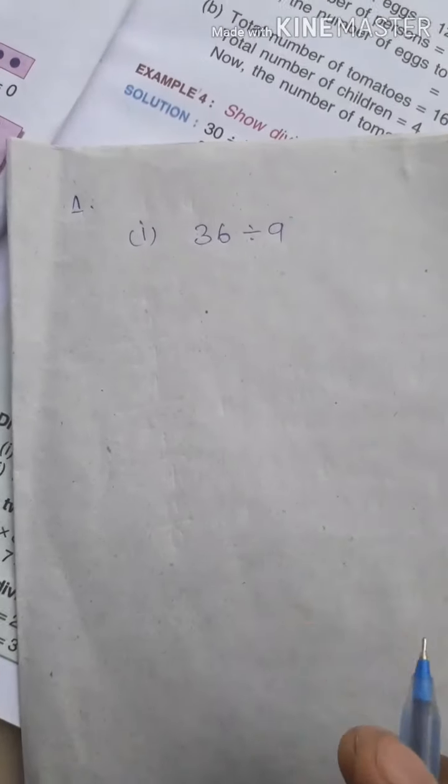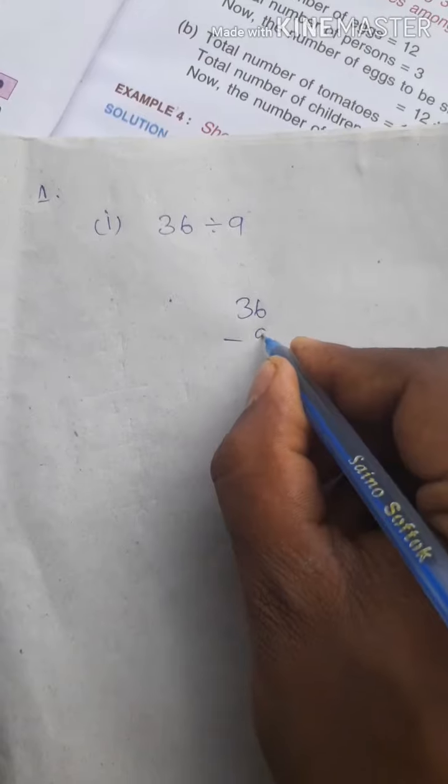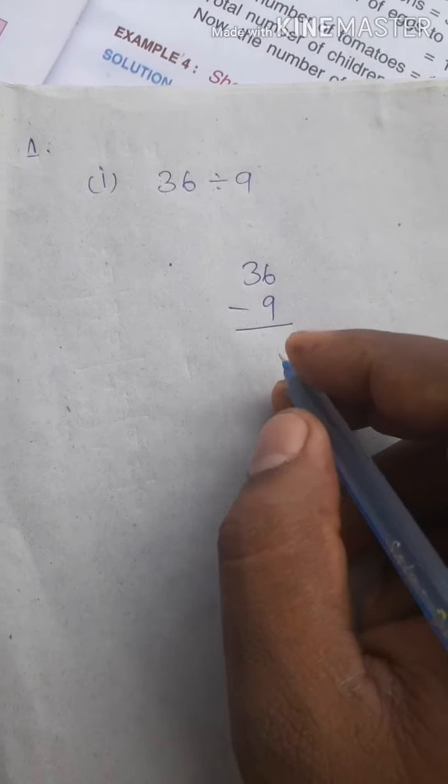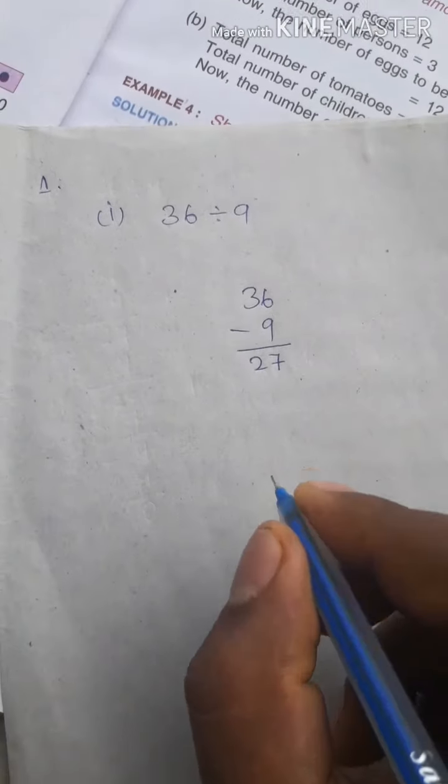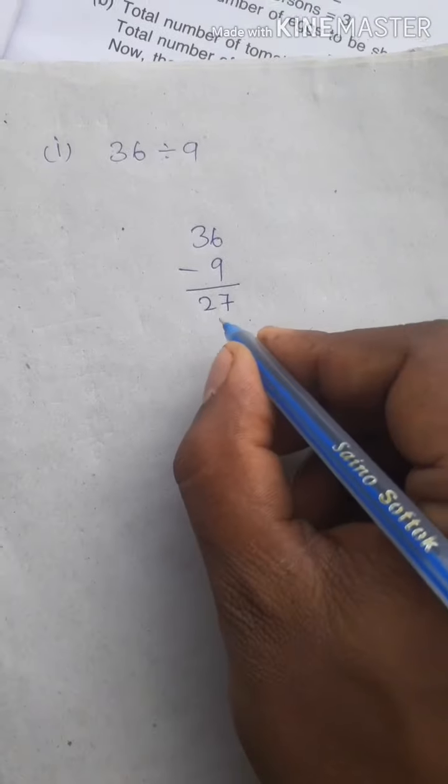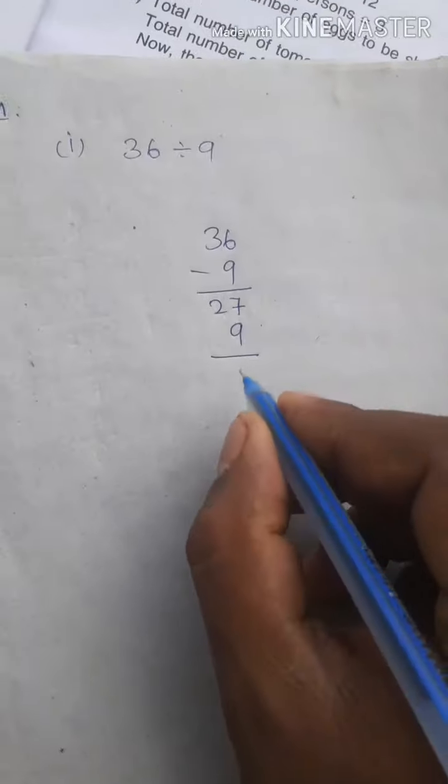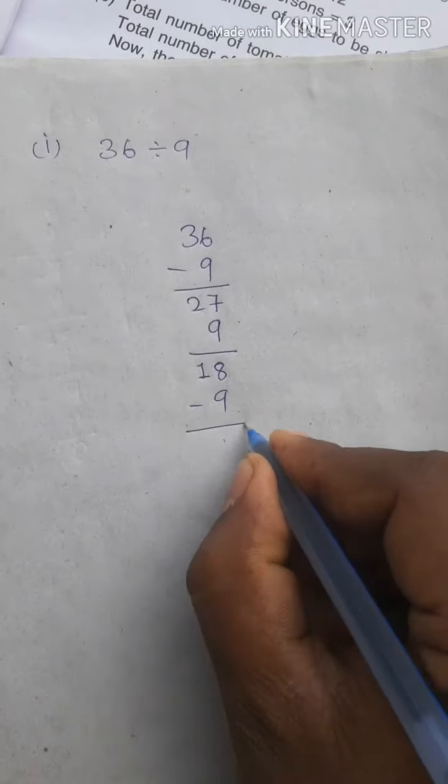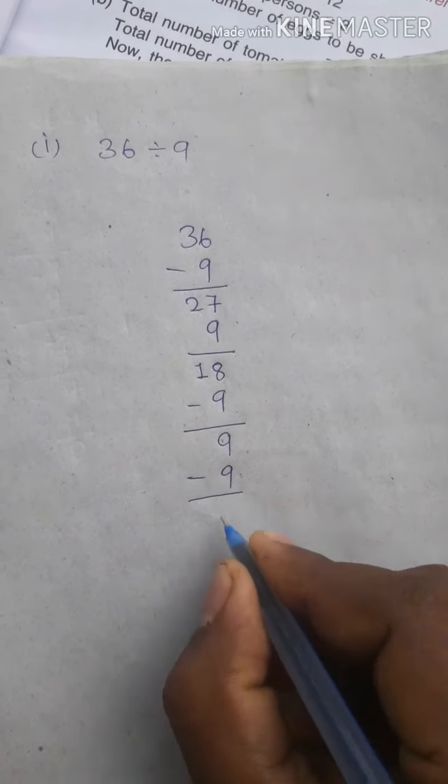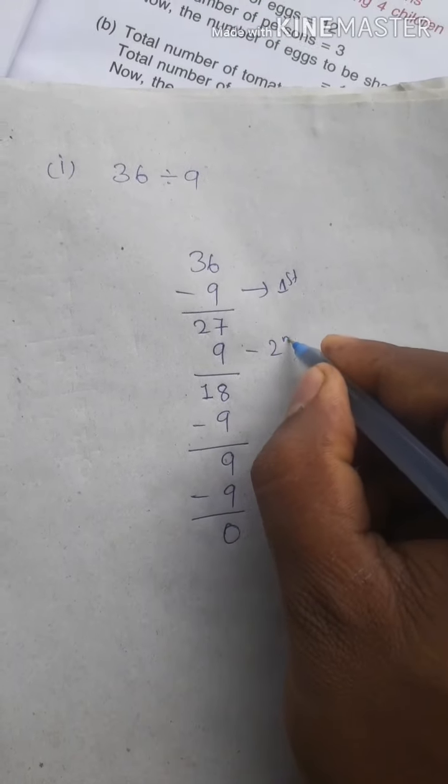Our equation is 36 divided by 9. For doing this, we will subtract 9 from 36. When we subtracted one time, we get 27 here. Then we subtract again, we will get 18. And we will subtract it again and we will get 9. And again, we will get 0.